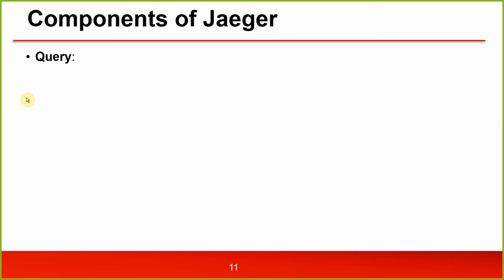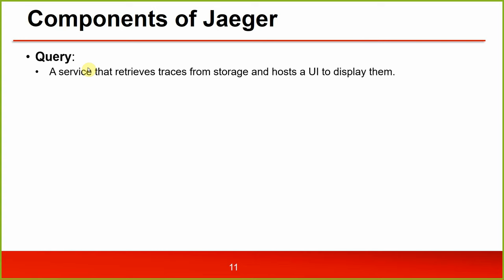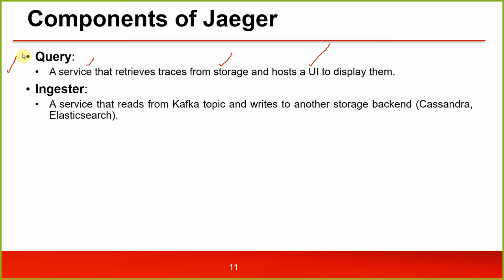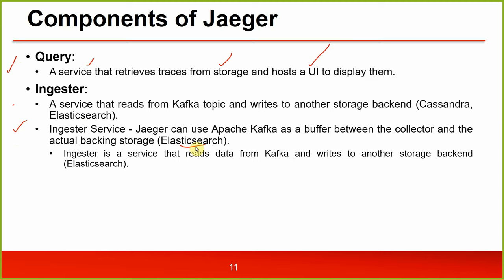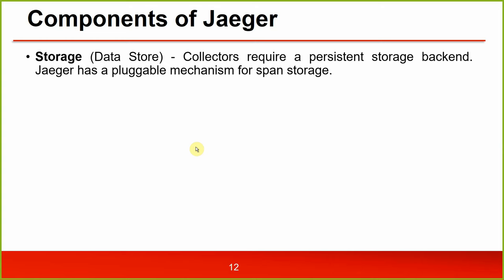Then we have the query - a service that retrieves traces from storage and hosts a UI to display them. Then the ingester - ingester is a service that reads from a Kafka topic and writes to another storage backend like Cassandra or Elasticsearch. Jaeger can use Apache Kafka as a buffer between the collector and the actual backing storage, which is Elasticsearch. Ingester reads data from Kafka and writes to another storage backend.